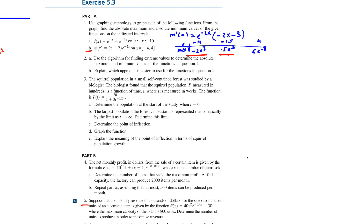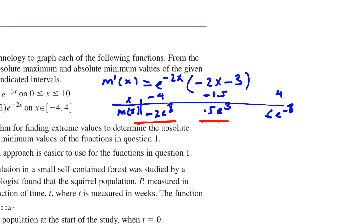The purpose of this is to be able to find the maximum and minimum by looking at the graph of a function. Now let's use the algorithm we had for finding the maximum and minimum of a function on a closed interval to find the maximum and minimum of m(x) on the given interval. We begin by finding m'(x), the derivative of the function.